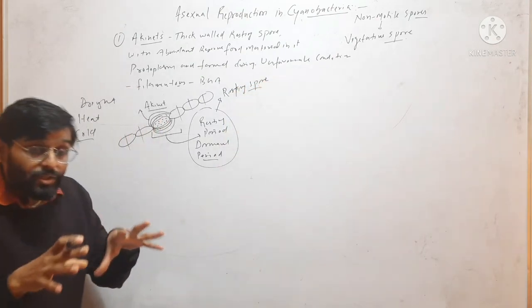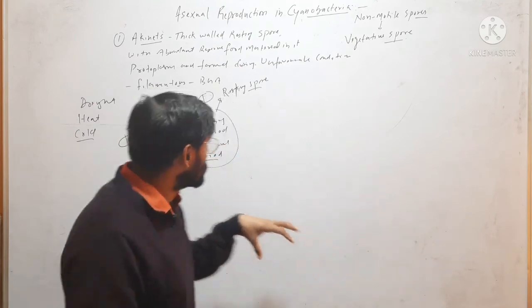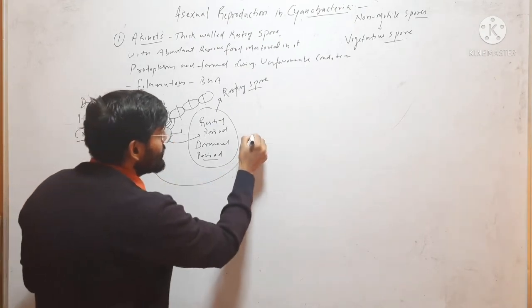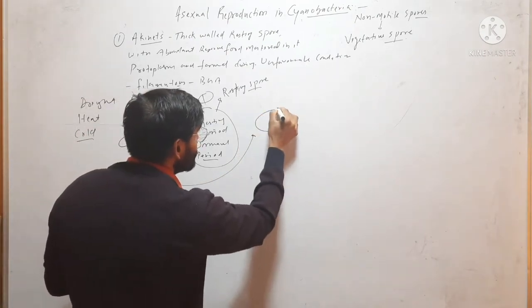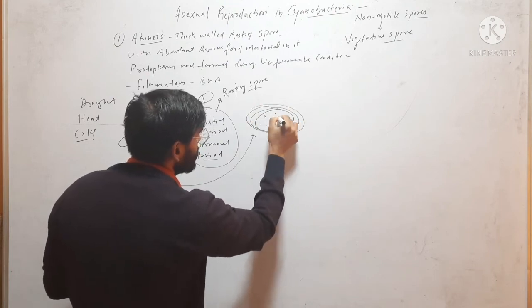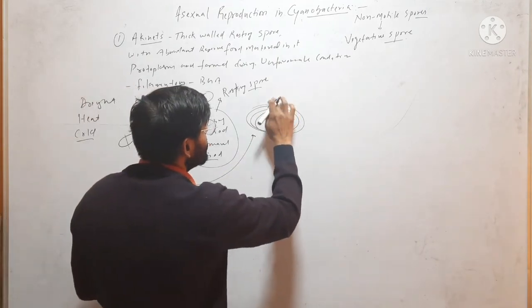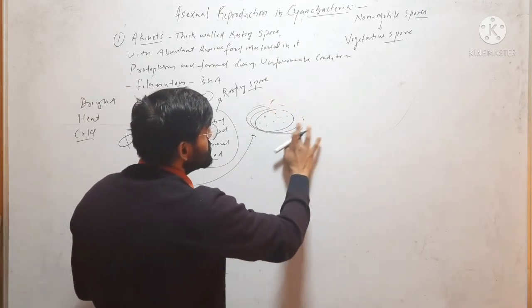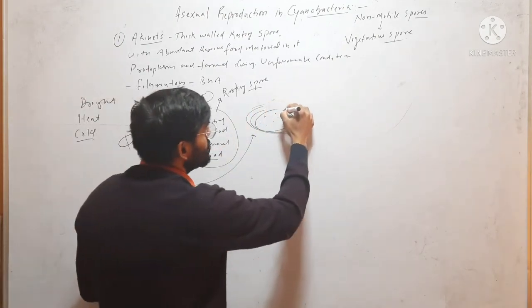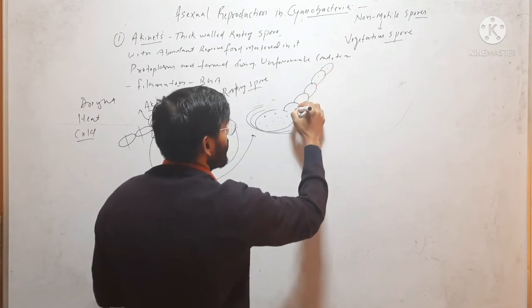Any spore that undergoes a dormant period before germination is called a resting spore. When favorable conditions return, the cell wall and additional wall layers dissolve, and it divides to form a simple filament. This is the akinete.